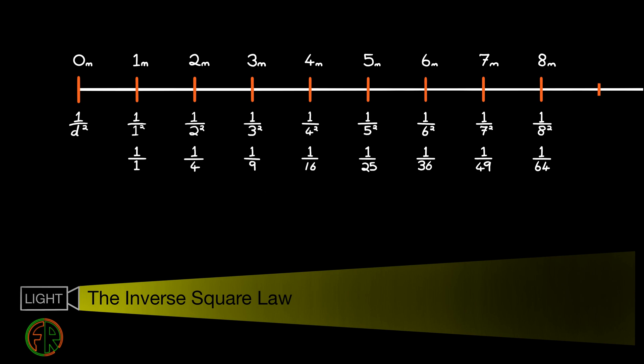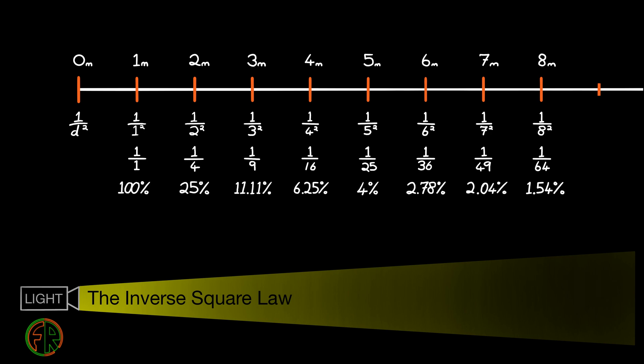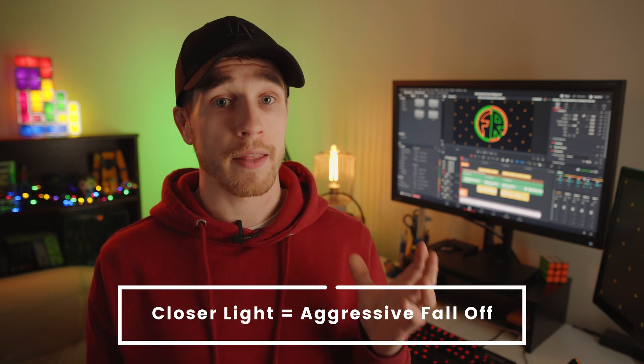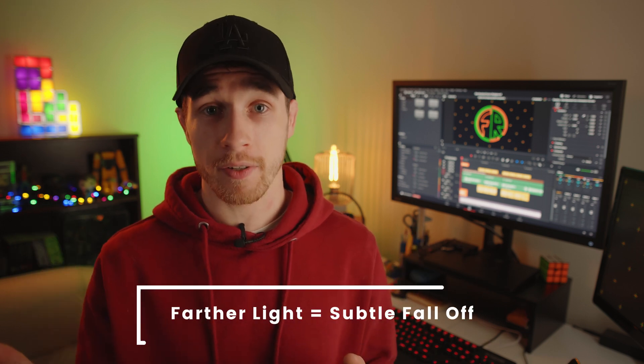This really starts to take shape when we convert the fractions to a percentage. If we look at the percentage lost from one to two meters, we lose a massive 75% of light intensity. Compare that to the percentage lost from seven meters to eight meters — that's only 0.5% of a loss. And that ultimately sums up the inverse square law: the closer the light, the more aggressive the fall off, and the further the light, the more subtle the fall off.